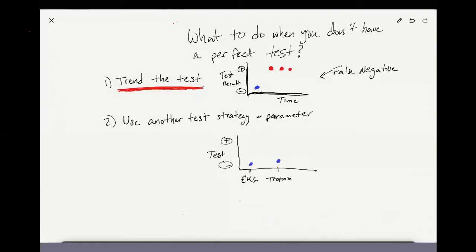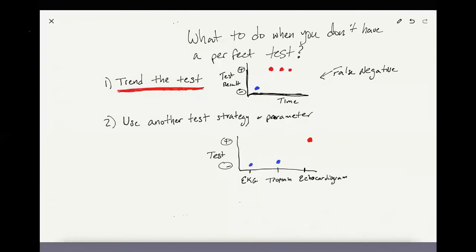Other than trending the test, you could also use another testing strategy or parameter. If somebody's having a heart attack and the EKG is negative and the troponin is negative, and you're suspicious they're having a heart attack, you can get an echocardiogram to show that a portion of the heart's not moving well, and you're like, oh yeah, okay, there's the heart attack. So you've got another testing strategy.